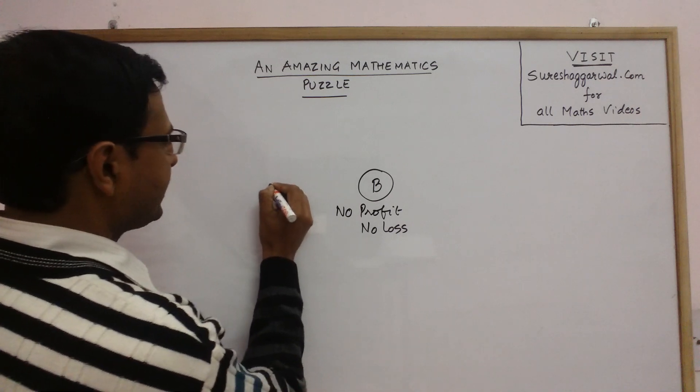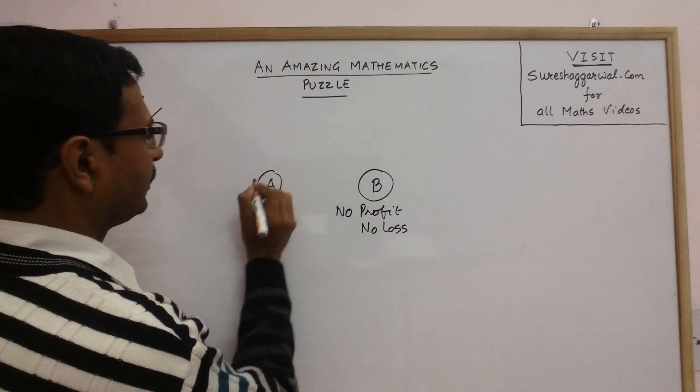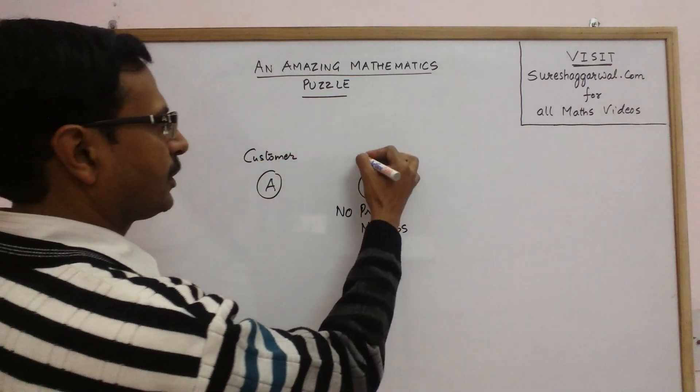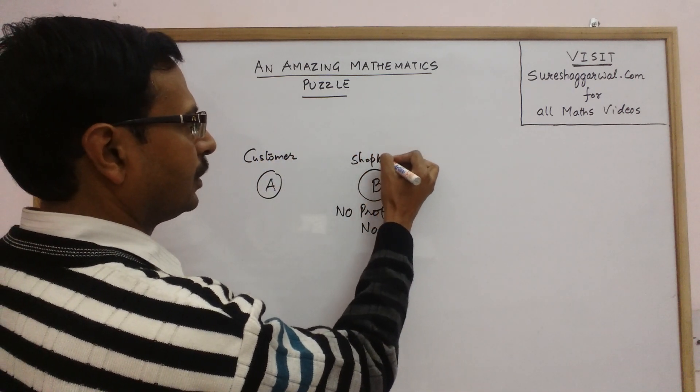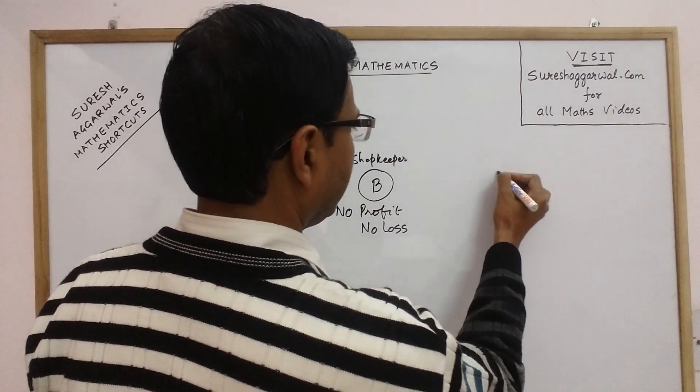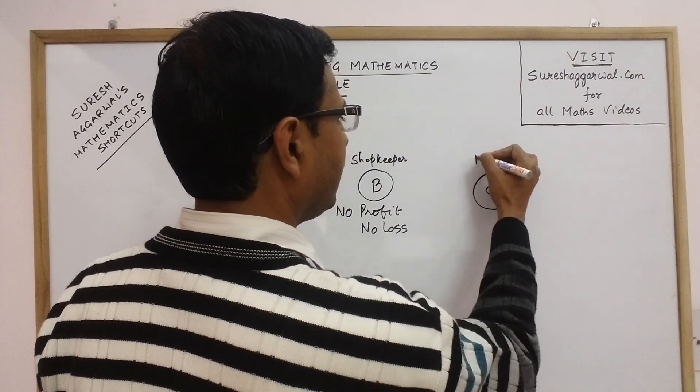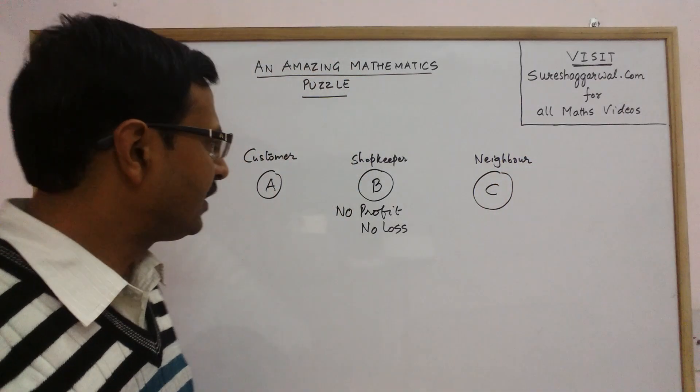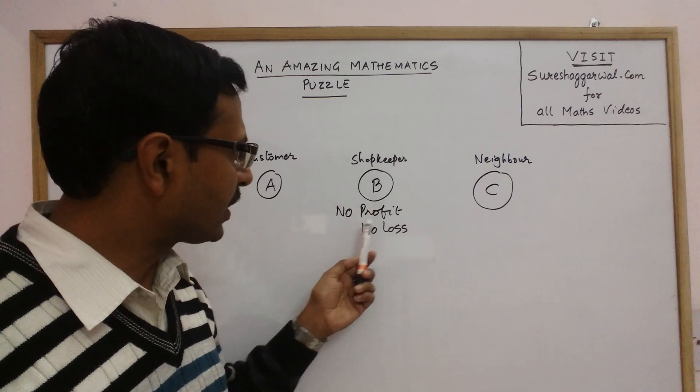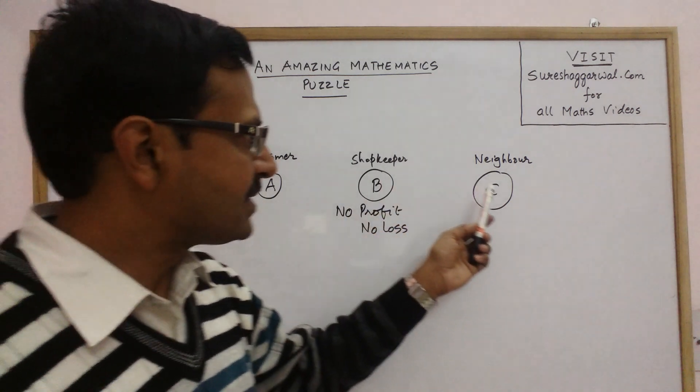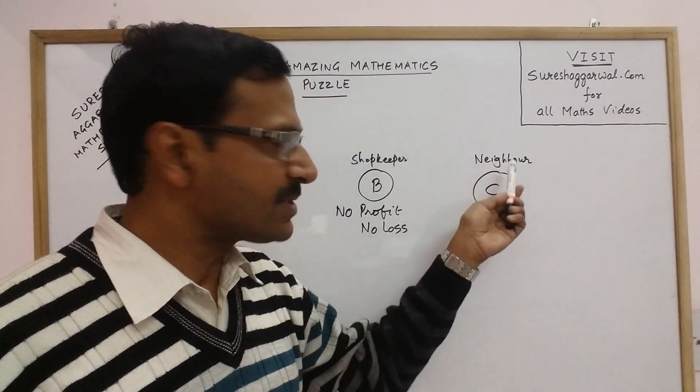Here is customer A. This is the shopkeeper. And here is C, his neighbor. So there are three persons involved in the puzzle. One is the shopkeeper who is selling products at no profit, no loss. A is the customer and C is the shopkeeper's neighbor.